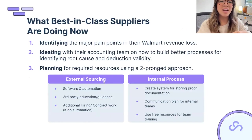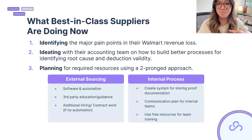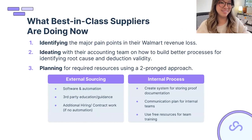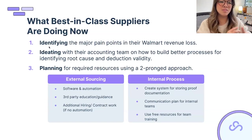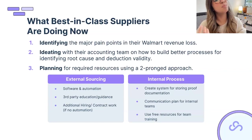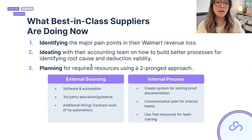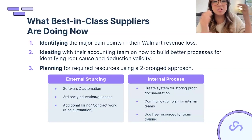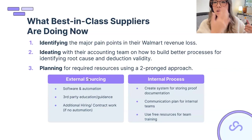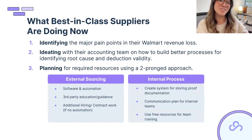Best-in-class teams create almost a command center with representatives from finance, supply chain, and sales all communicating together — for example, 'We're executing this promo, get ready for it on the back end.' Start by identifying your major pain points: do you even know where you're losing money? Getting reporting out of Retail Link isn't always easy. When you understand where you're losing, you can create strategies — do you have the supply chain, packaging, and proof documentation teams aware and aligned?